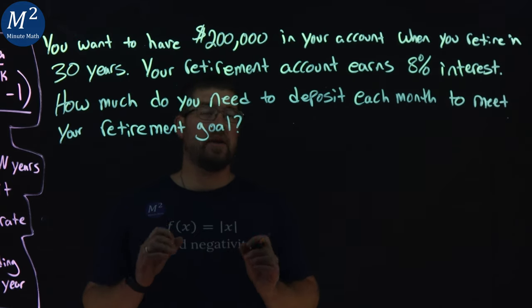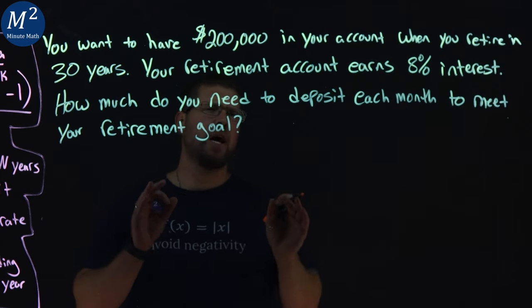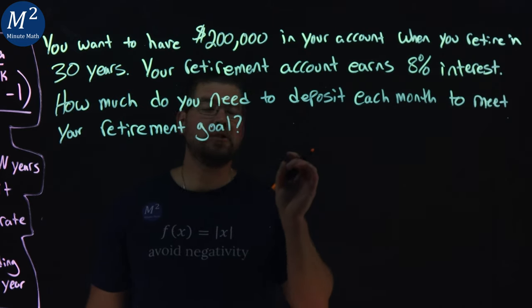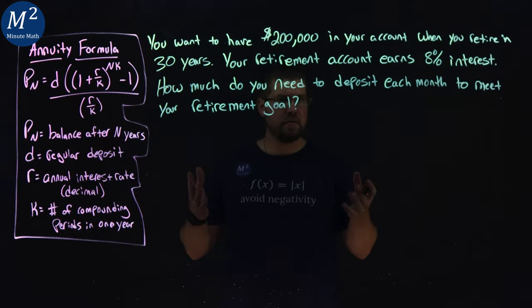You want to have $200,000 in your account when you retire in 30 years. Your retirement account earns 8% interest. How much do you need to deposit each month to meet your retirement goal? Let's learn.